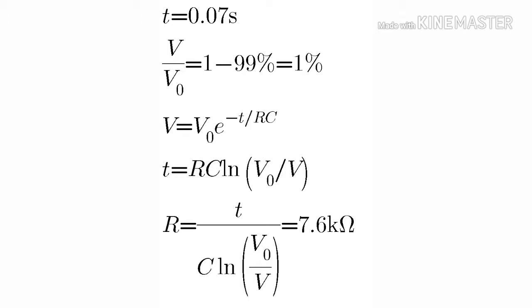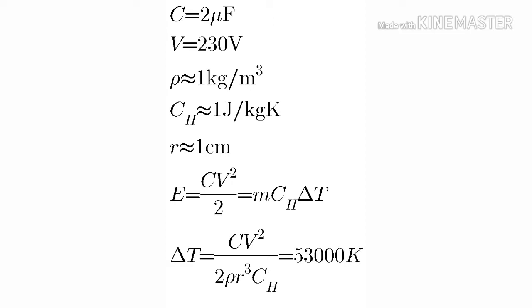Let's assume that 99% of energy is lost. Now I find the resistance to be 7.6 kiloohms. Now we find the temperature used to convert air into plasma. I assume that all electrical energy is converted into thermal energy and found the temperature to be 53,000 Kelvin. That's a huge temperature.